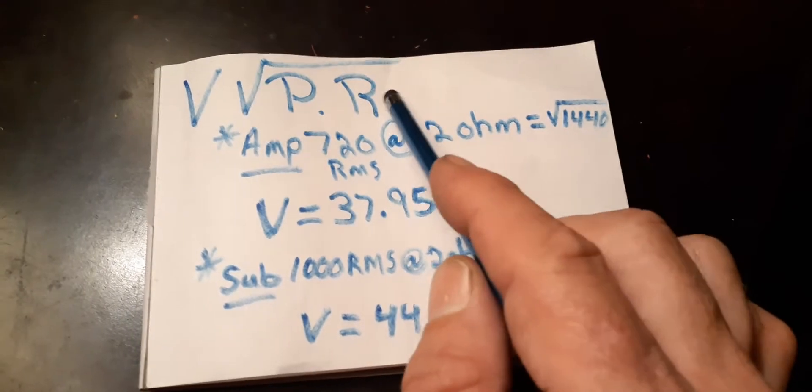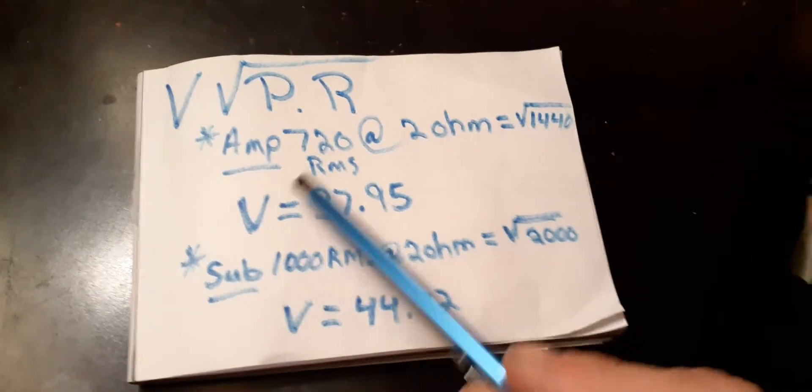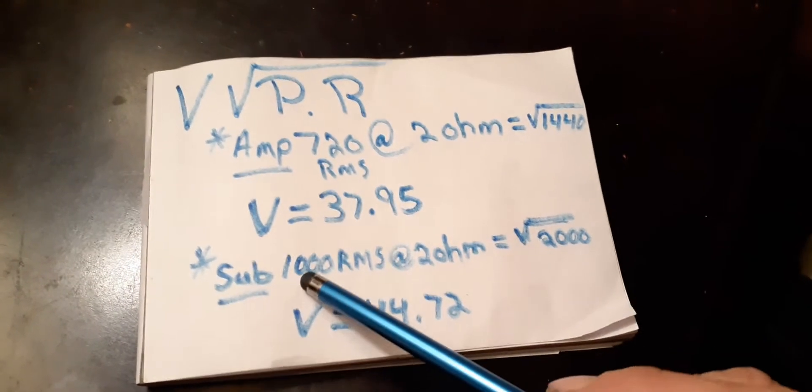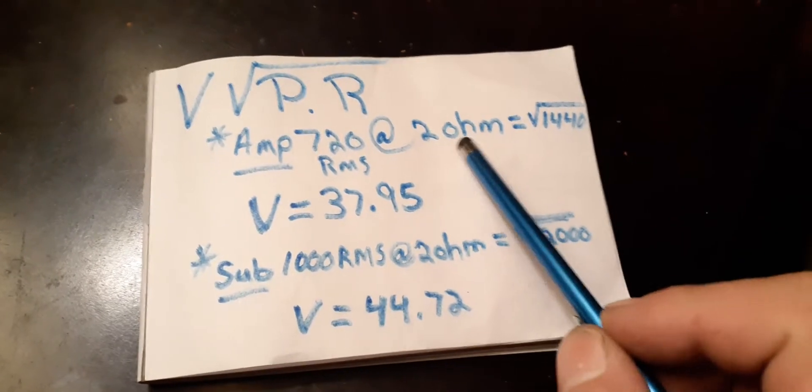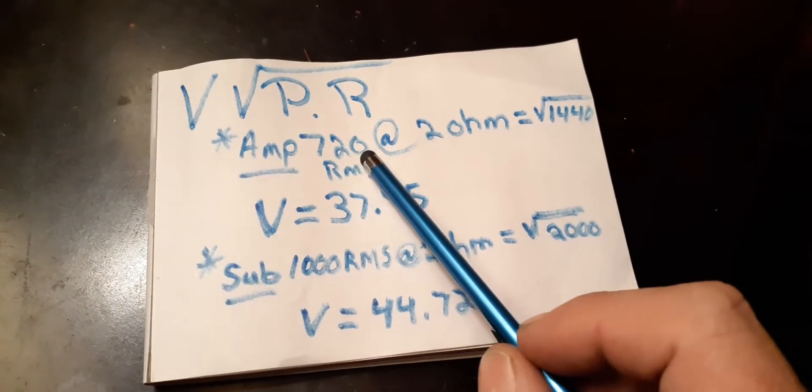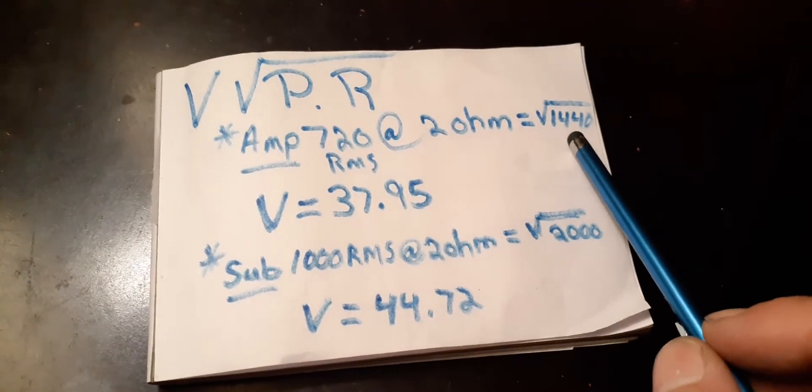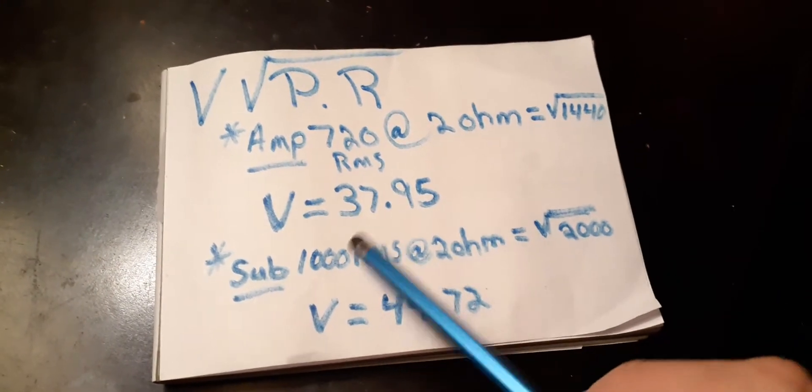You can either use your amp RMS or your sub. For the amp at 2 ohms, it's 720 RMS. 720 times 2 is 1440, you do the square root of that.